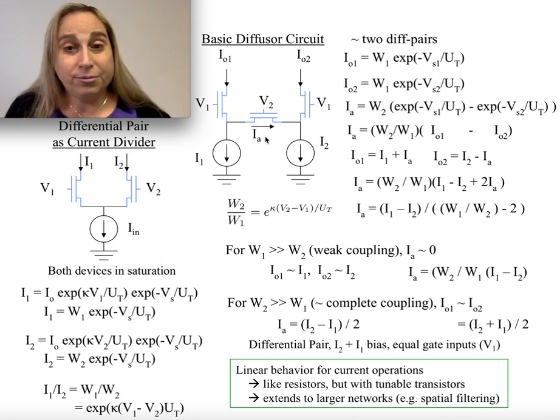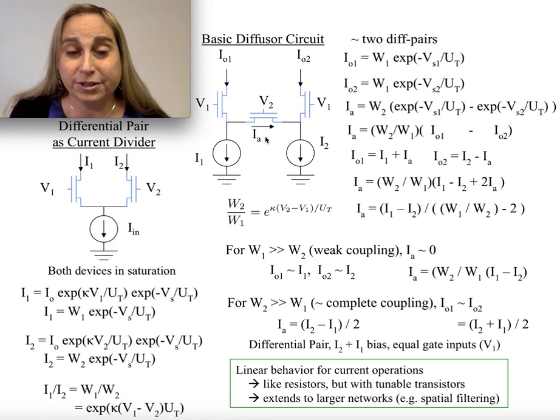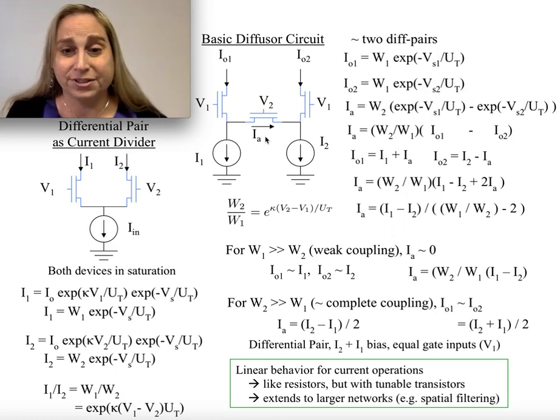Now we can continue through these and there are many different kinds of interesting examples, but what's really important here to notice is that I'm getting linear behavior for current operations that looks a lot like resistors, but it's with tunable transistors. And so I can still have the tunability all the way through and transistors that can be done on chip versus resistors, which are quite painful to do.